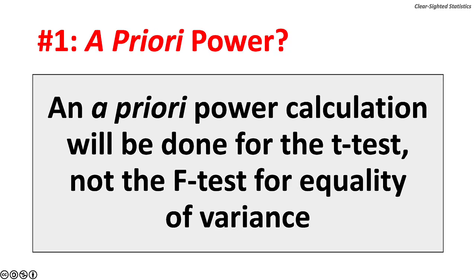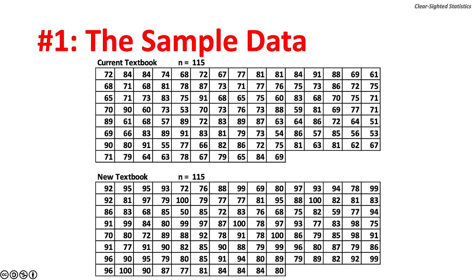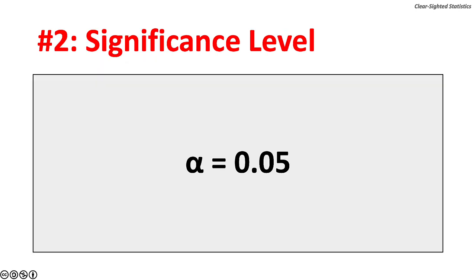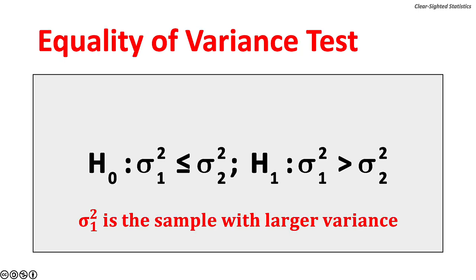An a priori statistical power calculation will be done for the t-test, not the F-test. Each sample has 115 observations. A 5% significance level has been selected for the equality of variance F-test. The null hypothesis: variance from the first sample is less than or equal to variance from the second sample (the first sample has the larger variance). The alternate hypothesis: variance from sample one is greater than variance in sample two.